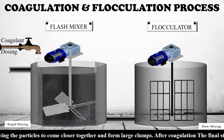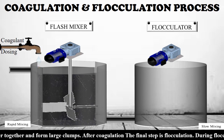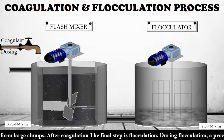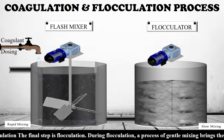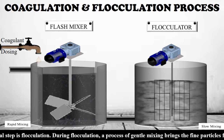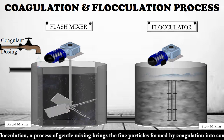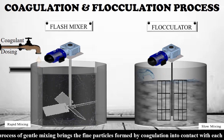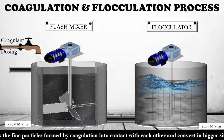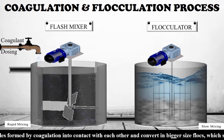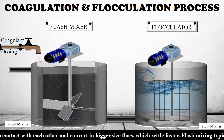After coagulation, the final step is flocculation. During flocculation, a process of gentle mixing brings the fine particles formed by coagulation into contact with each other and converts them into bigger size flocs, which settle faster.